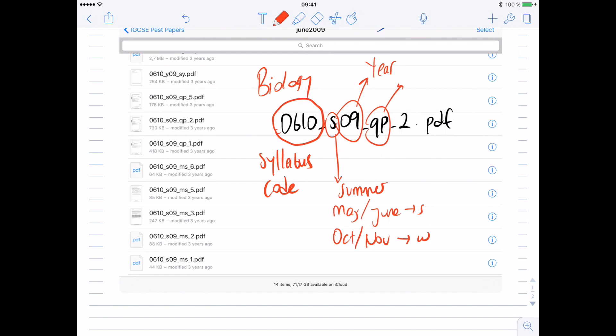QP means question paper. Is there any other alternative? Oh, yes, of course. Look at these file naming. MS meaning marking scheme, or SY here, which means syllabus. And the last number, 2, is a component.